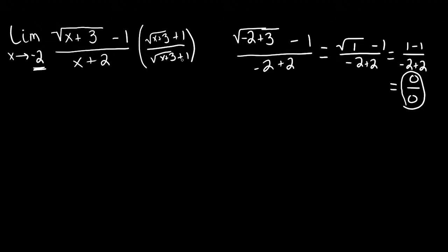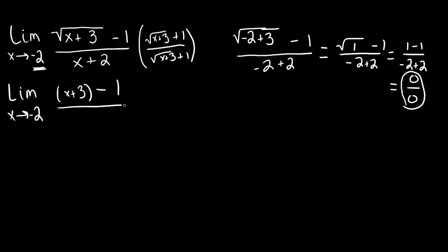We're going to multiply out the numerator, but leave the denominator in terms of its factors. The reason why we leave the denominator in terms of its factors will become apparent in a couple of steps. We do FOIL here because we're multiplying two binomials. Root x plus 3 times root x plus 3 gives us x plus 3. The outside and inside terms of FOIL give us a root x plus 3 times positive 1 and a root x plus 3 times negative 1, so those cancel out. The last term gives us negative 1 times positive 1, which is minus 1. We leave the denominator unfactored and rewrite it in terms of its products.